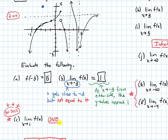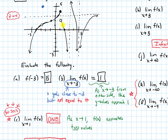This limit does not exist, and the reason is that as x approaches 1, f of x approaches 2 values. As I get close to 1 from the left, the outputs seem to be getting really close to 4. And as I get close to 1 from the right-hand side, the outputs get close to wherever this hole is, and that y value is 2. So the y values are getting close to 2 numbers, not 1 — so the limit does not exist.